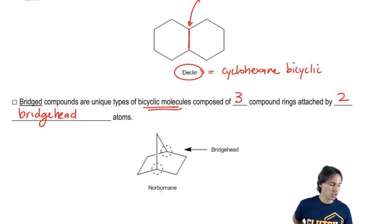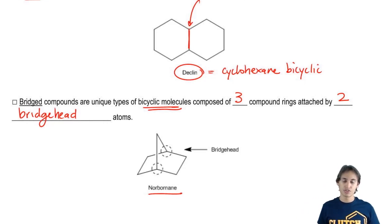So here's an example. This one's called norbornane and it's a very common bridge structure. And you're asking me, Johnny, where are the three rings? I do not see three rings. Well, there actually are.